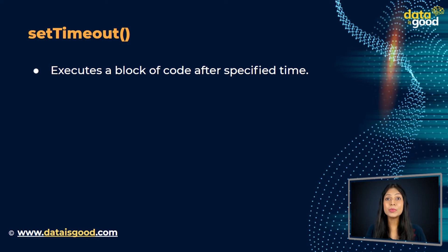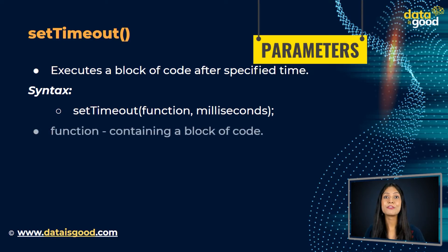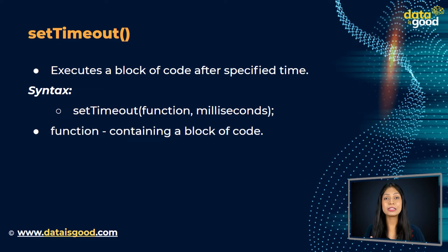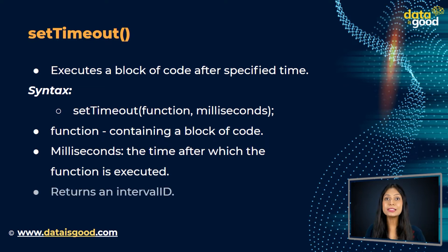The commonly used syntax of JavaScript setTimeout is: setTimeout(function, milliseconds). Its parameters are: function — a function containing a block of code, and milliseconds — the time after which the function is executed. The setTimeout method returns an interval ID, which is a positive integer.